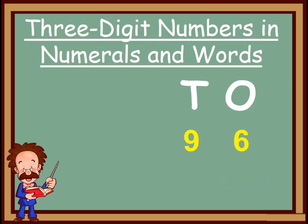Here comes another one: 9. You know at which place 9 is written? Yes, at the tens place. I hope you know how to read this number. In your previous class, you have learnt 2 digit numbers. Yes, we read it as 96. And you know one thing? We write as we read. So we read it as 96, we will write like 96.